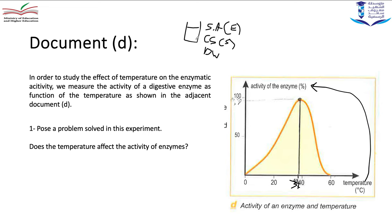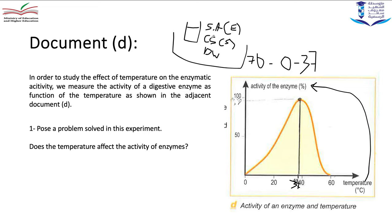Now I want to choose a suitable temperature for this test tube. We can place it in a water bath of 70 degrees Celsius, or 0 degrees Celsius, or 37 degrees Celsius. At 70°C there is no digestion, at 0°C there is also no digestion, but at 37°C it is a suitable temperature for salivary amylase activity.